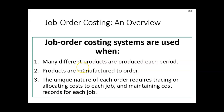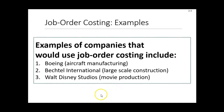When companies offer many different products that are produced within a period, we look at each individual job and consider how much material, how much labor, and how much overhead costs should be assigned to each individual job — job A, job B, job C, etc. We're going to learn how to assign costs using a job order costing system.